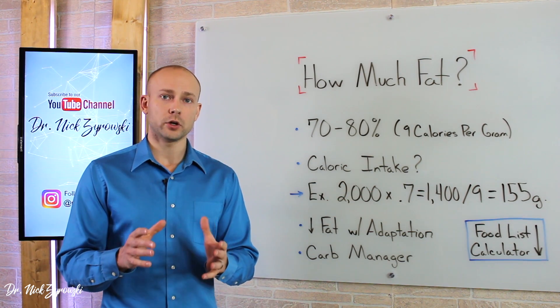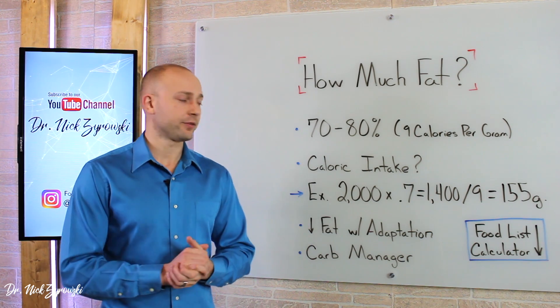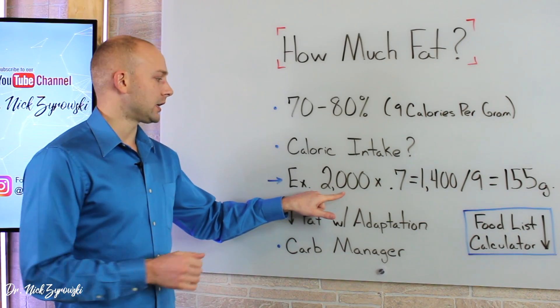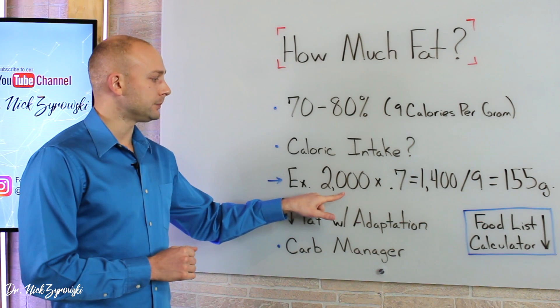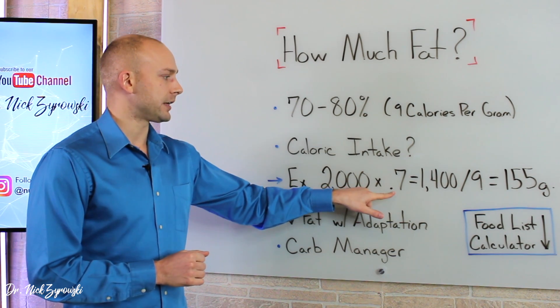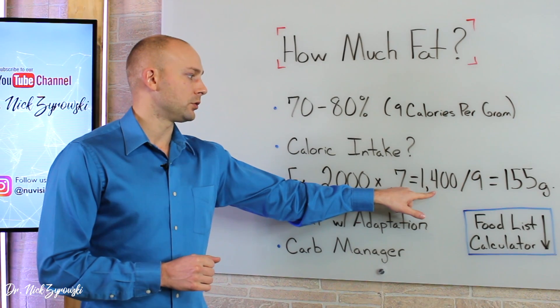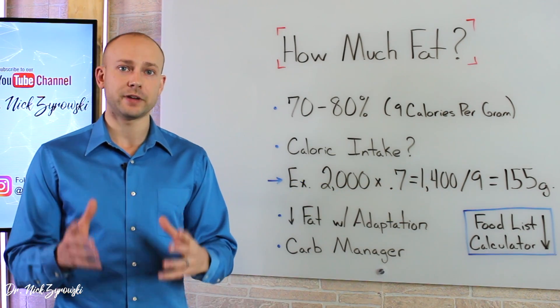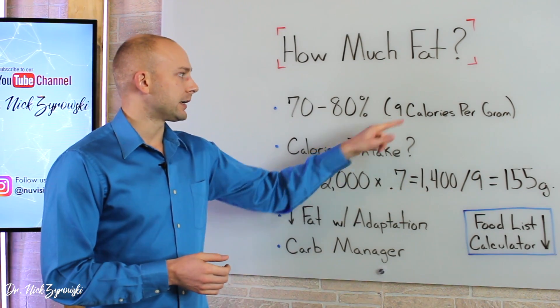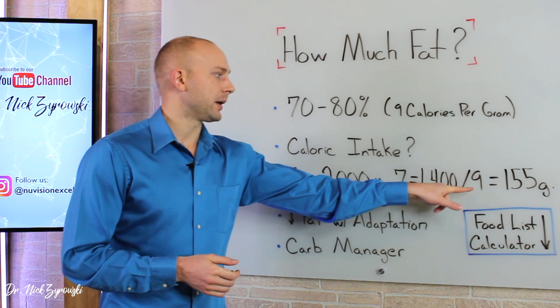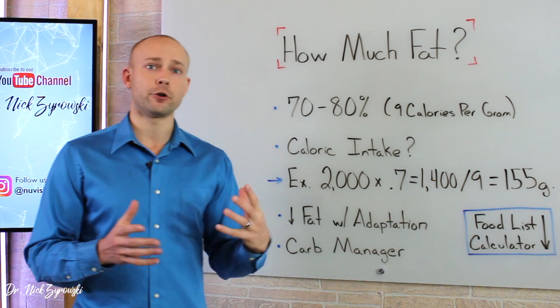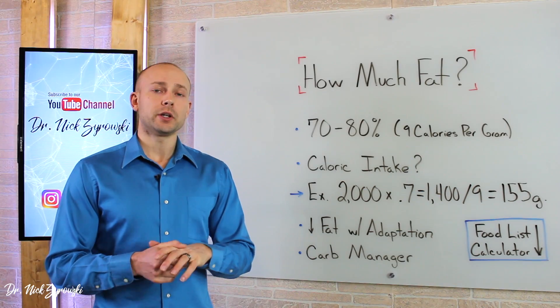Here's how this equation looks to really dial in your grams of fat. So let's say, for example, you're taking in 2,000 calories per day. You times that by 0.7 for 70 percent, and you come out to find that you're supposed to be consuming 1,400 calories of fat per day. Well, there's nine calories in each gram of fat, so you divide that by nine and you end up with 155 grams of fat.